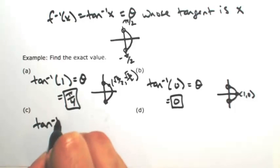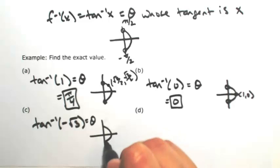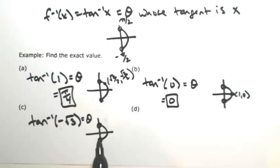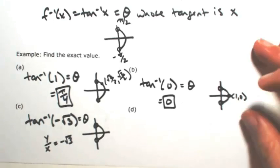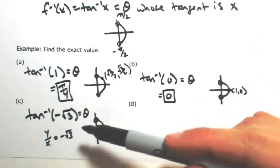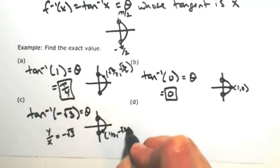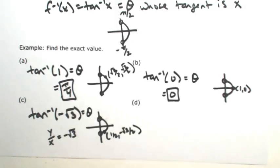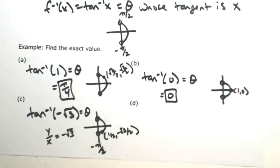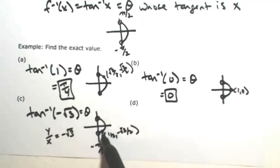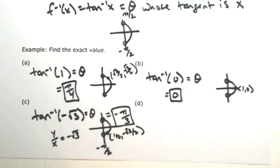Let's do a negative: the inverse tangent of negative √3. Looking at the right side of the unit circle — because this is negative, it must be in the fourth quadrant. I'm looking for where y/x gives negative √3, so the y-coordinate must contain the √3. That takes place at (1/2, −√3/2). Dividing y by x cancels the denominator, leaving negative √3. Using the clockwise angle, this is negative π/3. Note that 5π/3 is not an acceptable answer because it's outside our restriction.